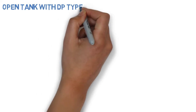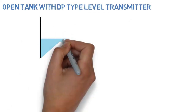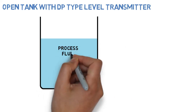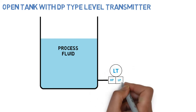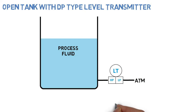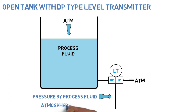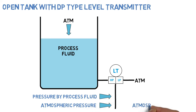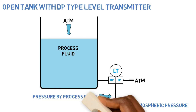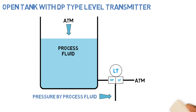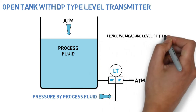Open tank with DP type level transmitter. Pressure by process fluid will act on the HP side of the transmitter. Atmospheric pressure will act on the LP side of the transmitter. Atmospheric pressure on both sides will cancel each other. Hence we measure the level of the tank directly from the pressure of the process fluid.